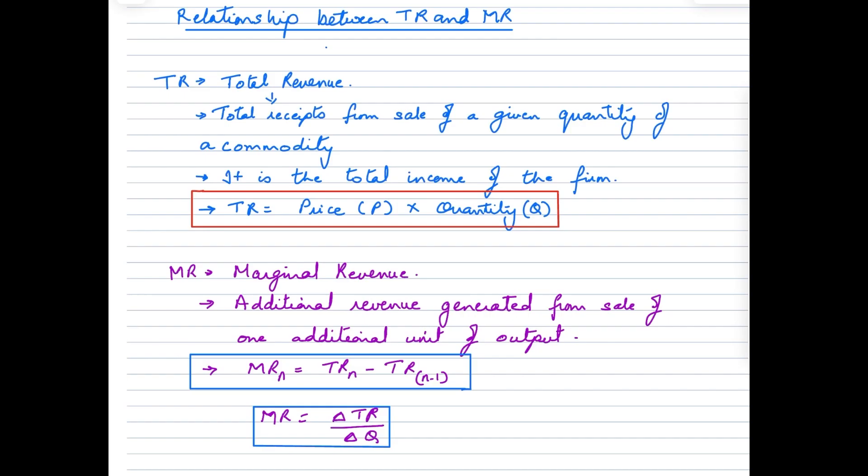TR means Total Revenue. In other words, Total Revenue is the total receipts that the firm would get by selling a given quantity of commodity that it produces. It is the total income of the firm. How do we calculate Total Revenue? It's calculated by multiplying the price at which the units of the commodity are being sold times the number of units sold. So it's Price × Quantity.